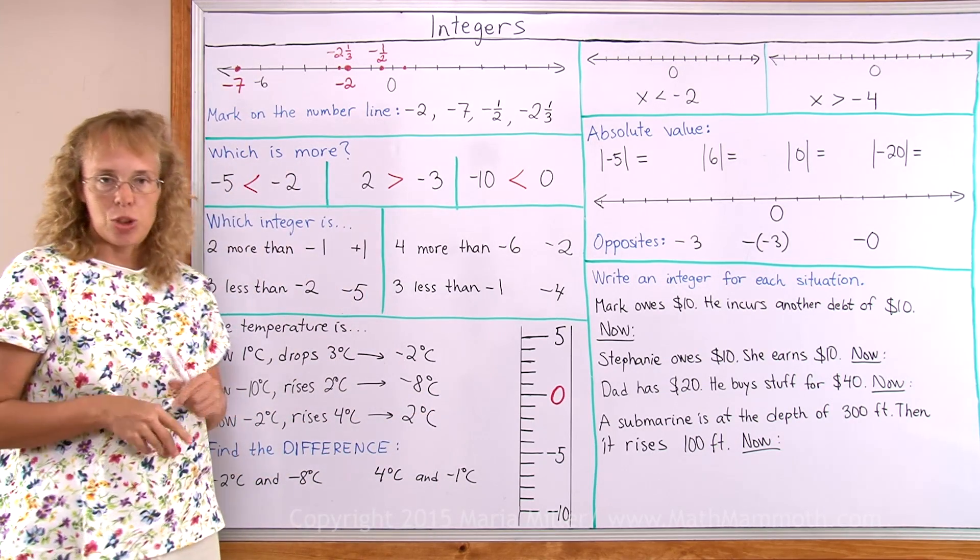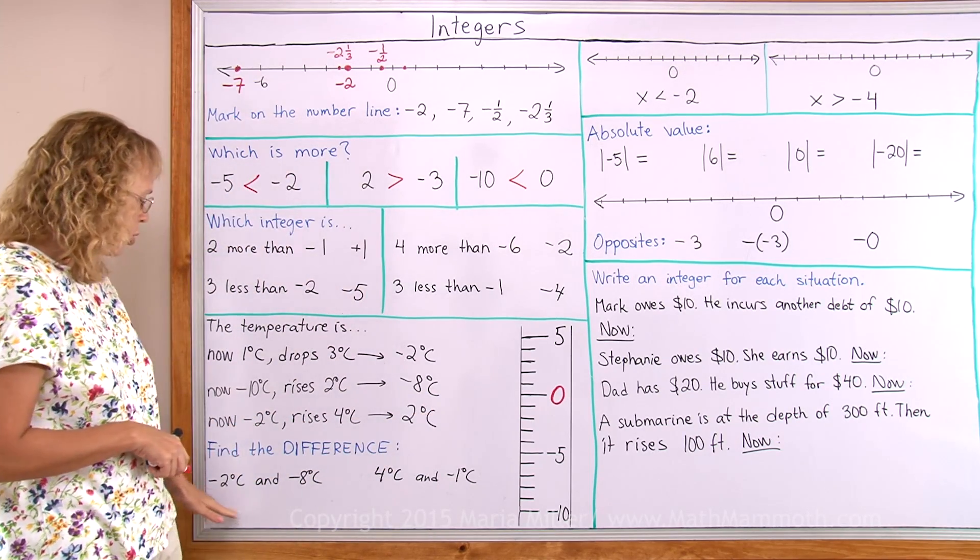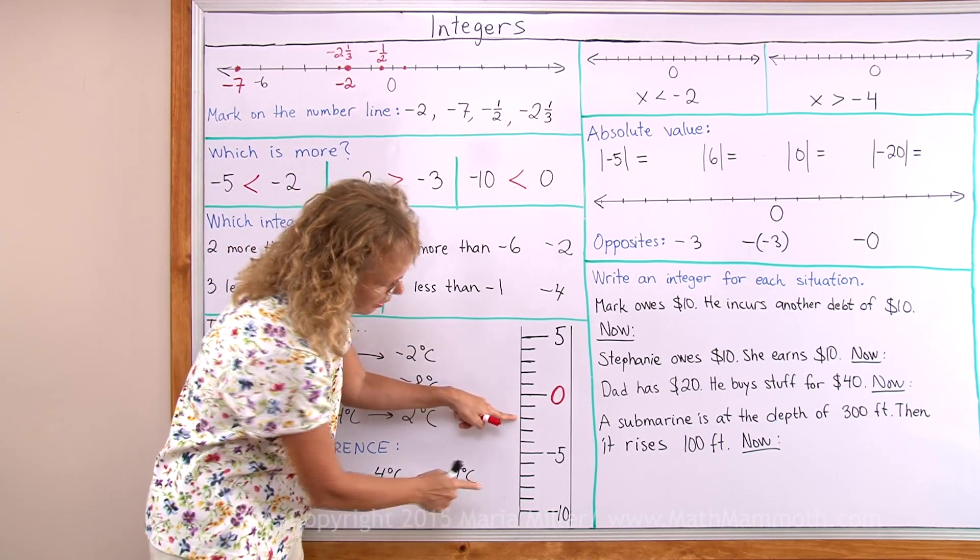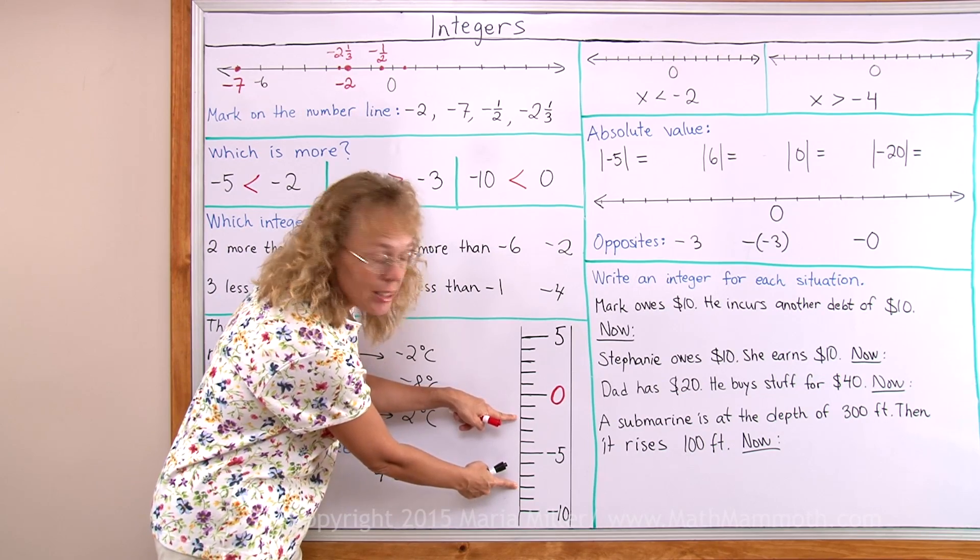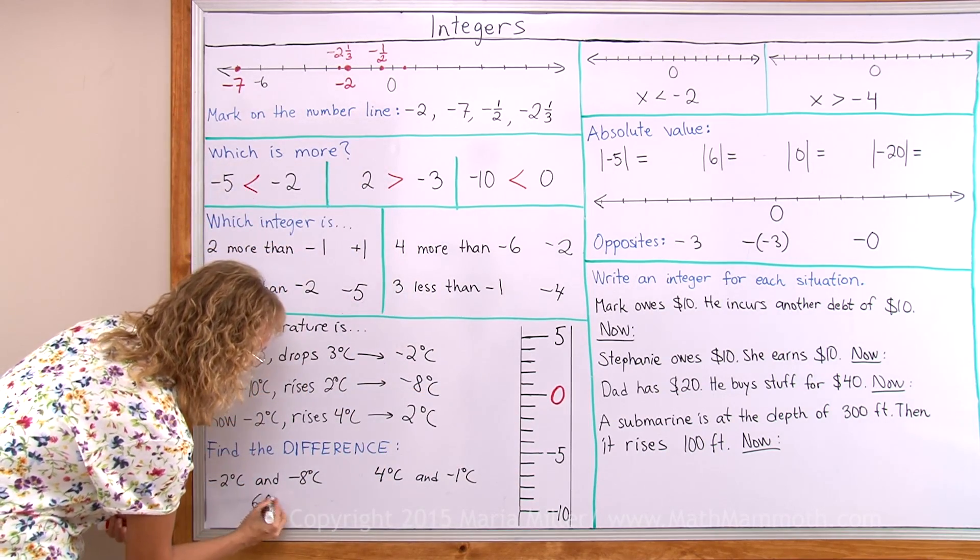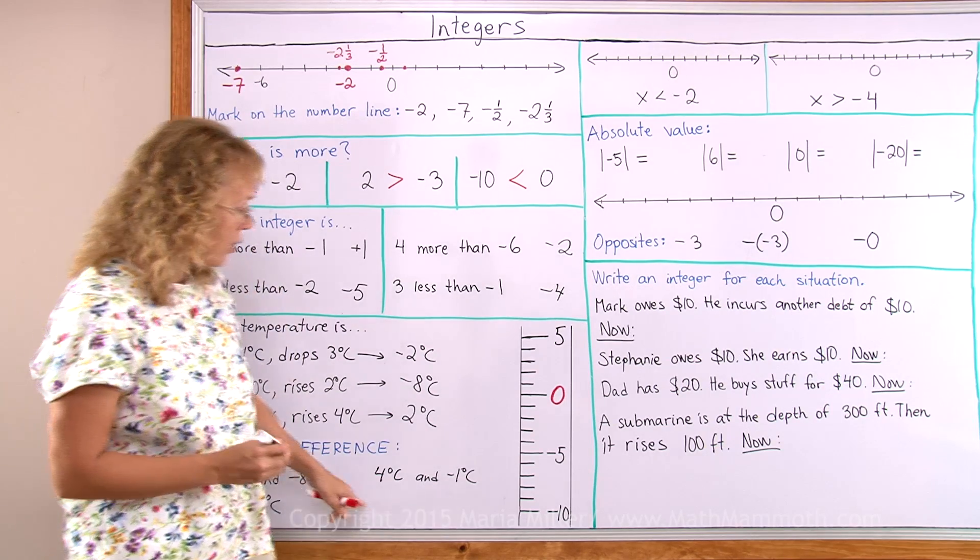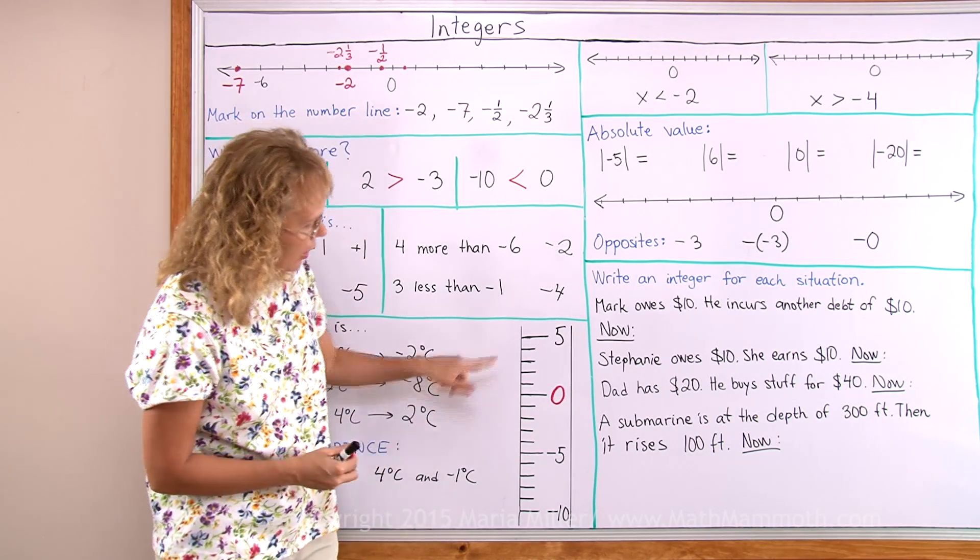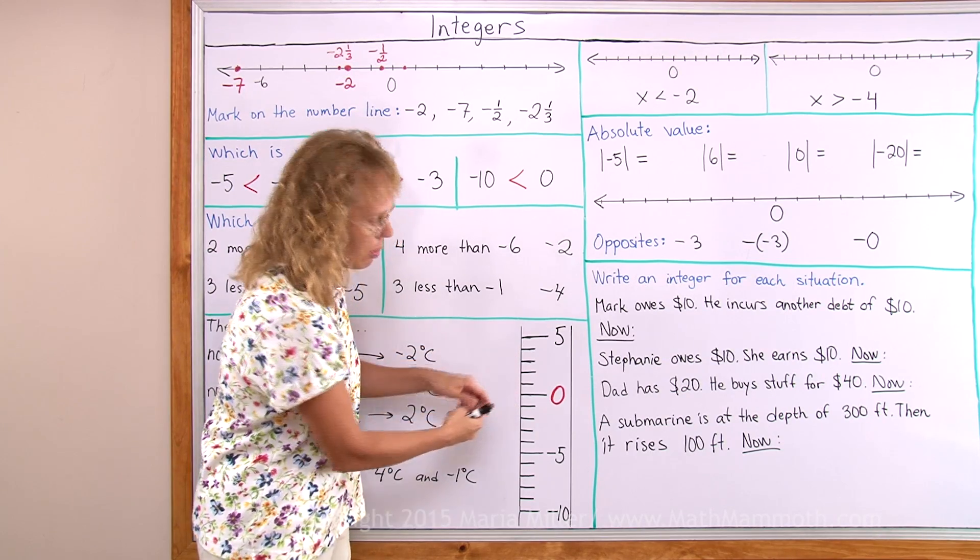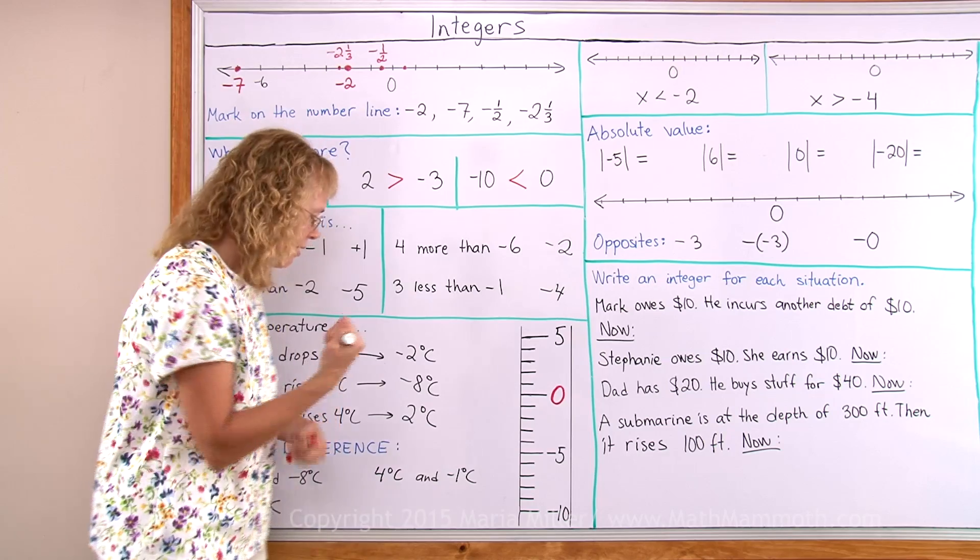Find the difference in these two temperatures. Minus 2 and minus 8 degrees. Minus 2 here and minus 8 here. The difference is 6 degrees. And 4 and minus 1. 4 here and minus 1. So there is 4 degrees to 0, and then this one more degree. So the difference is 5 degrees.